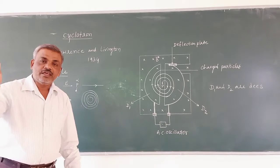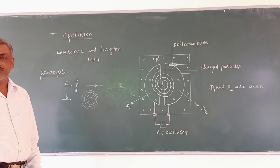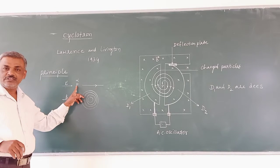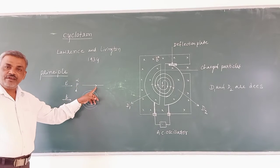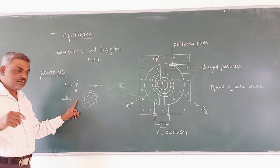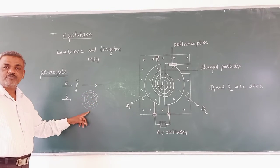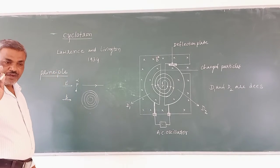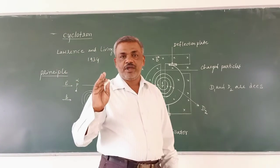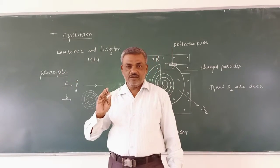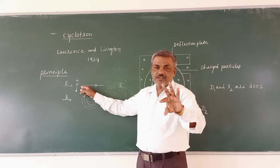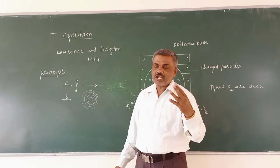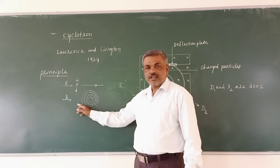The functions of electric and magnetic fields in a cyclotron: the electric field makes the charged particles get accelerated. The magnetic field makes the charged particles move along a circular path. When electric and magnetic fields are mutually perpendicular, that configuration is called a cross field.